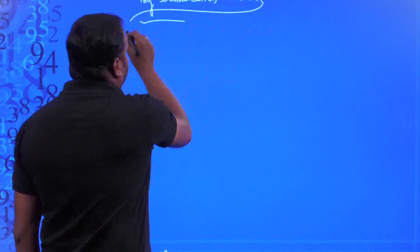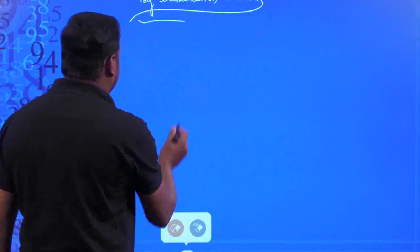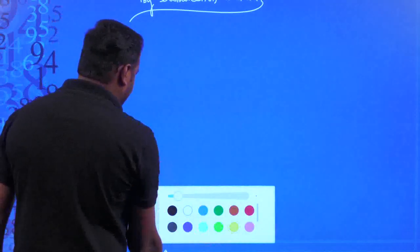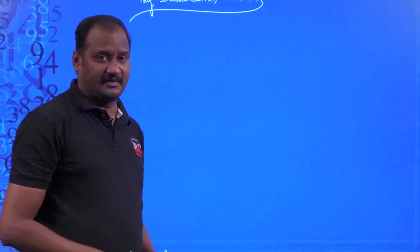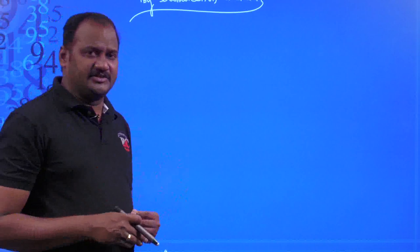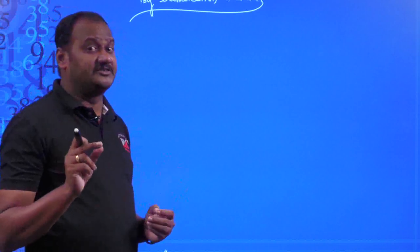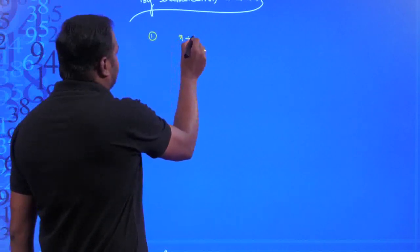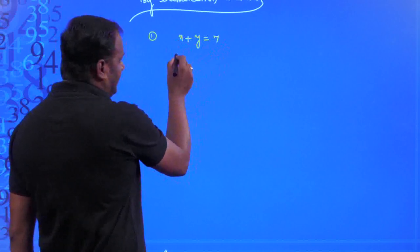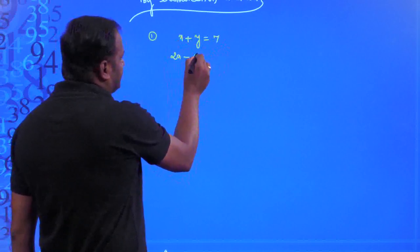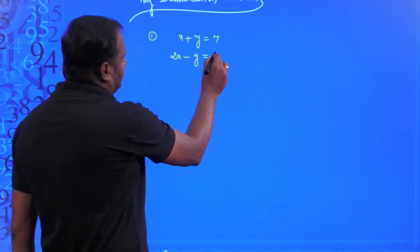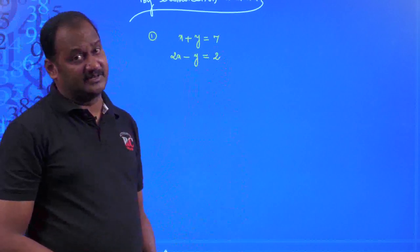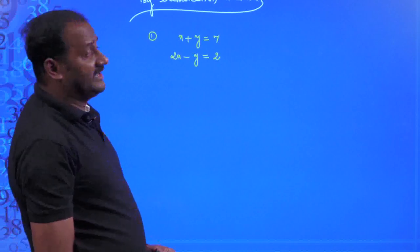By the elimination method, we can easily and comparatively solve a pair of linear equations, and we frequently use this method. The example is: x + y = 7 and 2x − y = 2. These two are a pair of linear equations and we will solve by the elimination method.